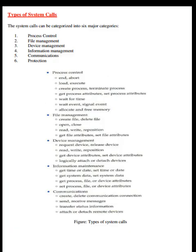Types of system calls: system calls can be categorized into six major categories — process control, file management, device management, information management, communications, and protection.